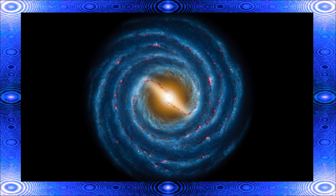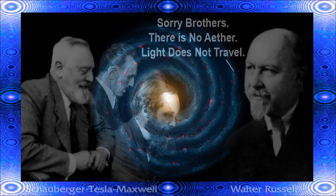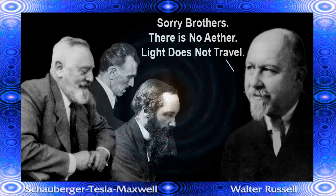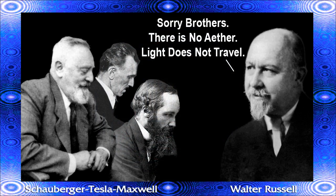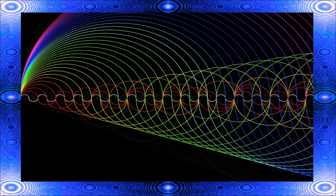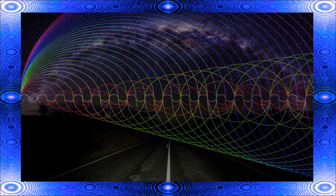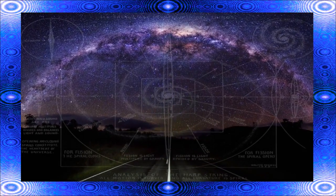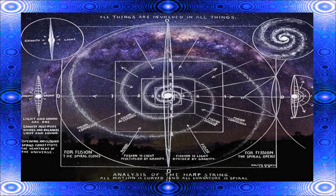I had to bring this up because I'm seeing a lot of information. A lot of people, I think with good hearts and good minds, are actually trying to solve the free energy crisis. What we've got is a bunch of people believing in archaic ideas like ether, just because Schauberger, Tesla, Maxwell, and people like this a hundred or more years ago believed in an ether. The ether was created to try to explain how light traveled through space. Well, Walter Russell has explained to us that light does not travel through space — light repeats itself from wave field to wave field of space.